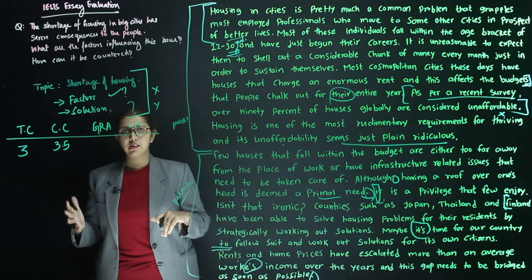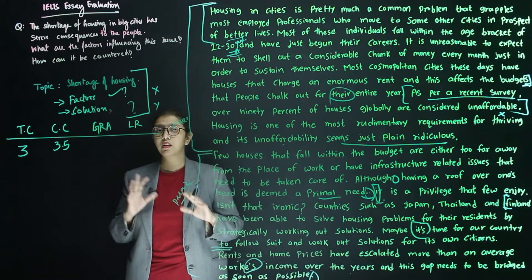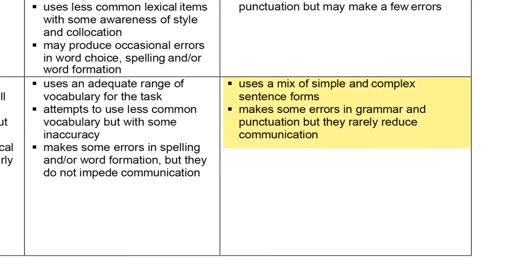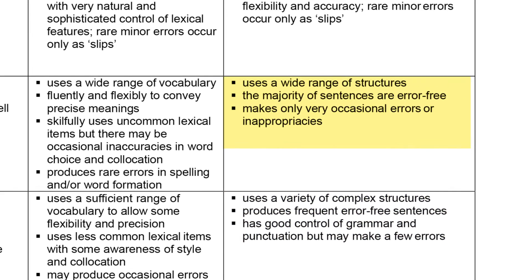Now let us look at the band descriptors for grammatical range and accuracy. Band 6 describes it as: 'Use of a mix of simple and complex sentence forms, makes some errors in grammar and punctuation but they rarely reduce communication.' Band 5 says: 'Uses only a limited range of structures' — which is not true here, as this person has used a lot of grammatical structures. Band 7 says: 'Uses a variety of complex structures, produces frequent error-free sentences' — no, there are quite a few errors. So I think we can give this person a band 6 for grammatical range and accuracy.